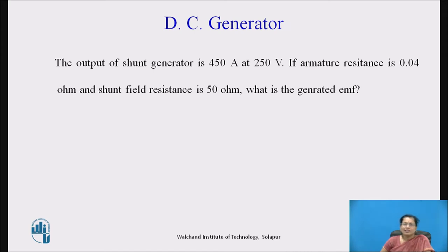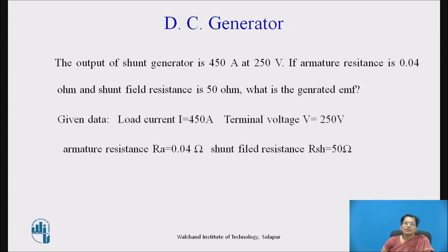First, let us write down the given data. The shunt generator current is 450 ampere, that is the load current IL equal to 450 ampere. Terminal voltage V is given as 250 volt. Armature resistance RA equal to 0.04 ohm and shunt field resistance RSH equal to 50 ohm.